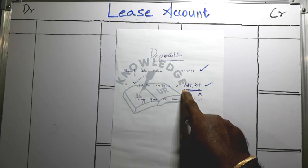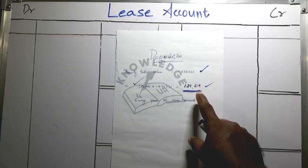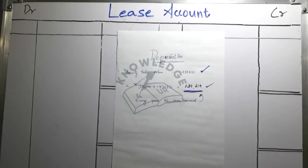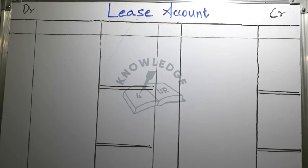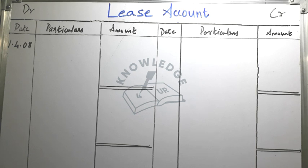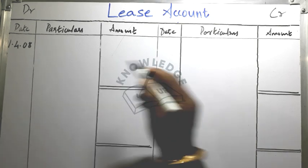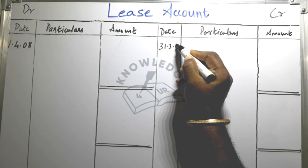The amount of depreciation remains fixed — this amount is fixed each year and that amount is charged. The accounting period is the 1st year, ending 31-3-2009.